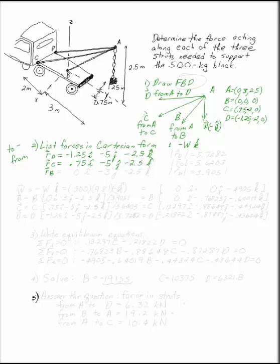And B has nothing in the i direction, minus 3j, minus 2.5k. If you pick a different direction for your arrows on your free body diagram, you get different signs on your position vector. These are the position vectors.